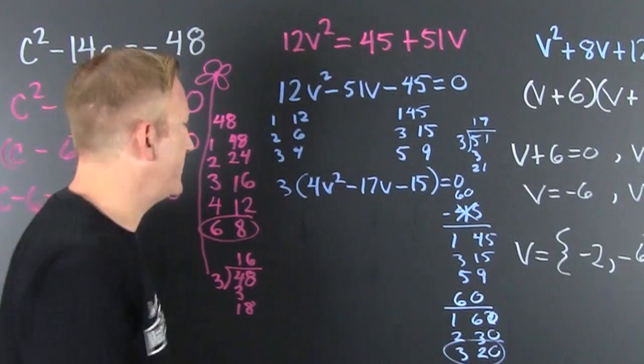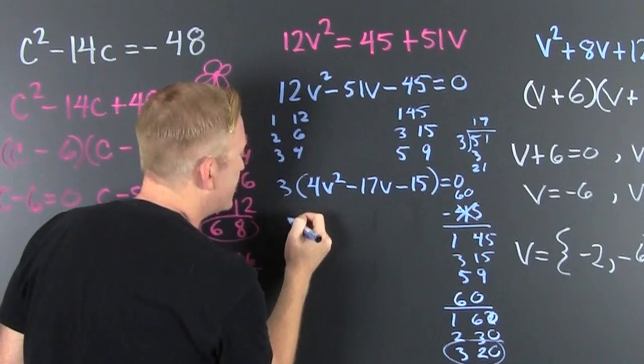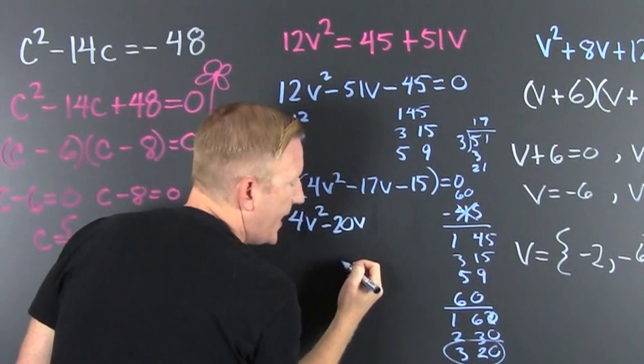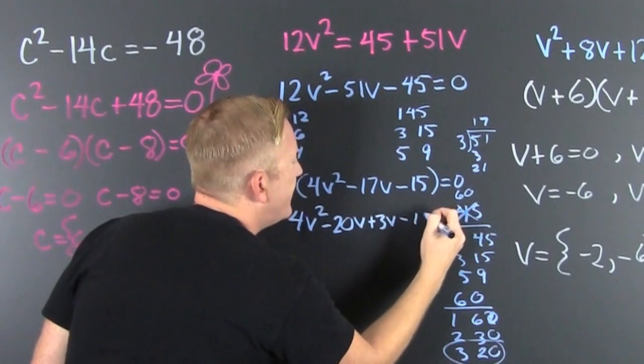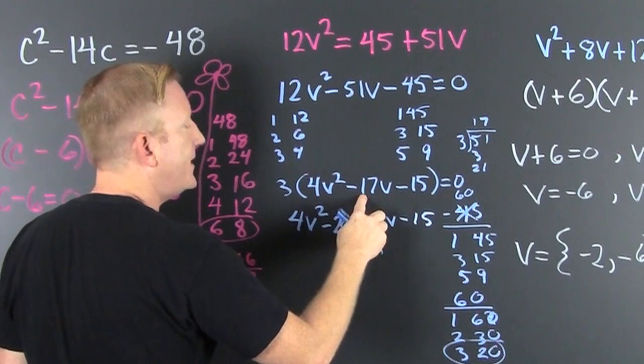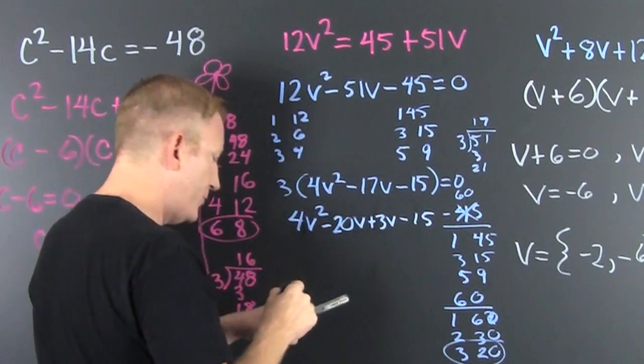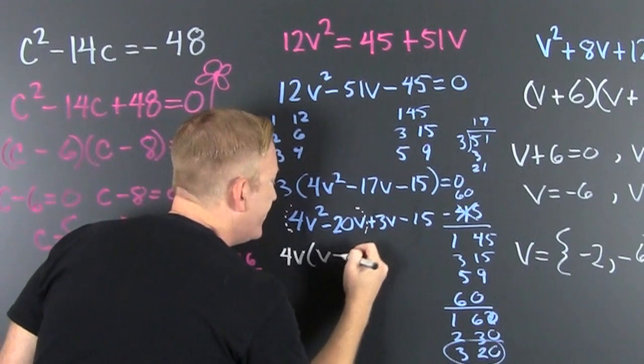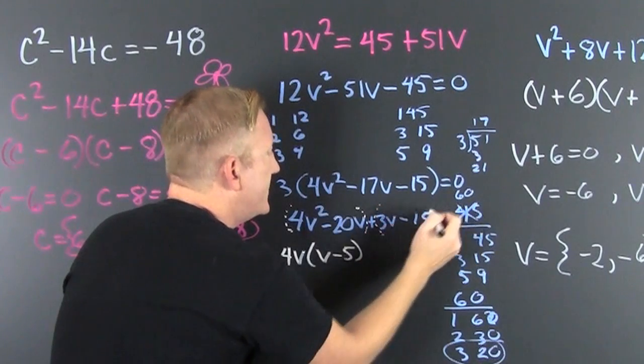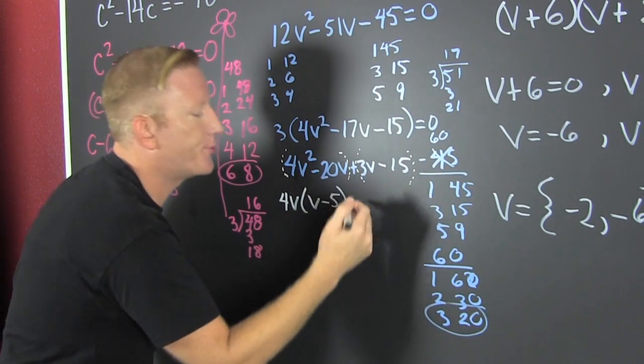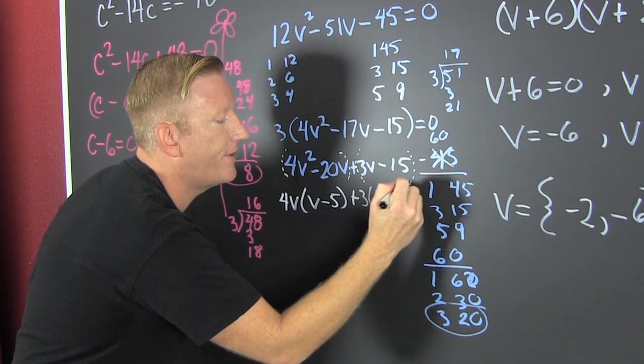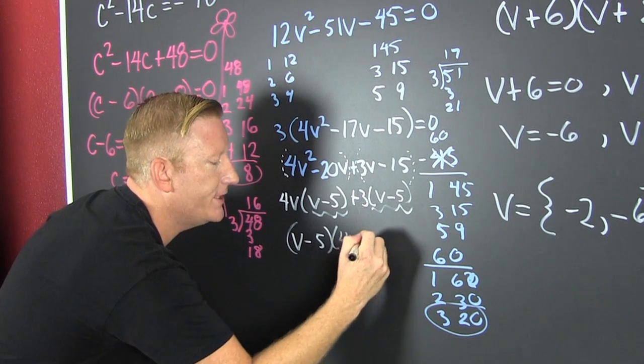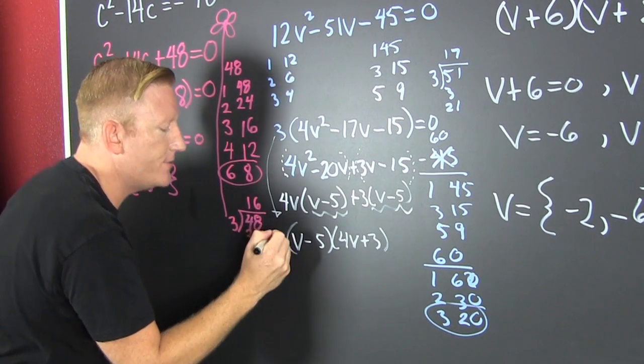So now we go back. That 3 is still gonna be on the outside but I'm gonna neglect him for now. That's 4v squared, the signs are different and the big one's negative, so that's minus 20v and then plus 3v minus 15. What did we do? Nothing, we rewrote 17 as minus 20 plus 3. Now we factor by grouping and I pull a 4v out of there, and left over in there is a v minus 5. And then I pull a 3, a positive 3, and we have a v minus 5. Now that we have that common factor we can pull that guy out, that's v minus 5 times 4v plus 3. I'm gonna bring that 3 on down now, and that's equal to 0.